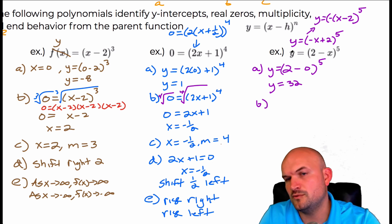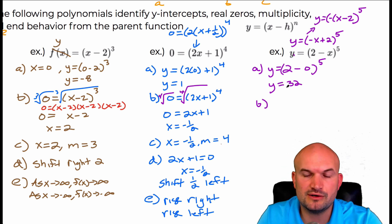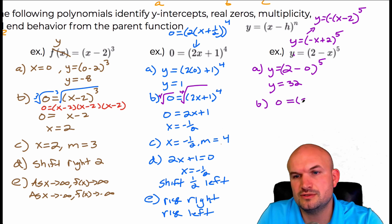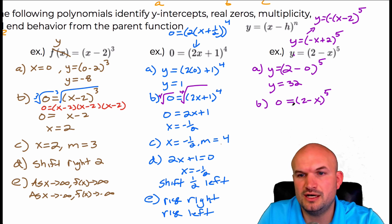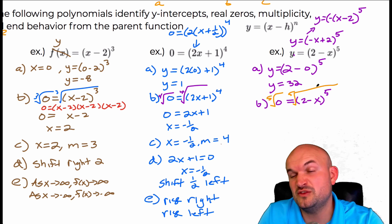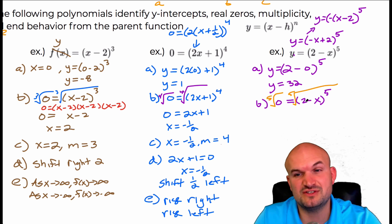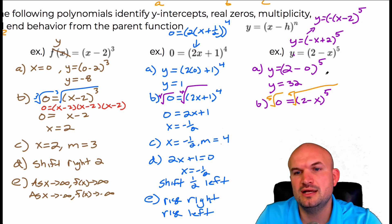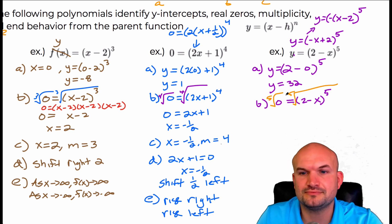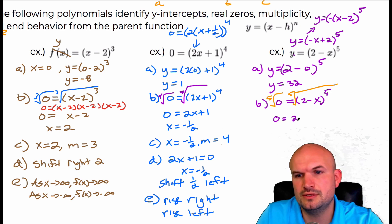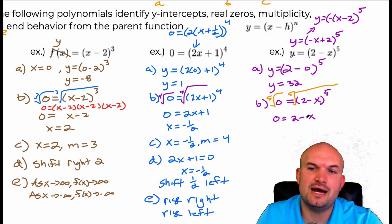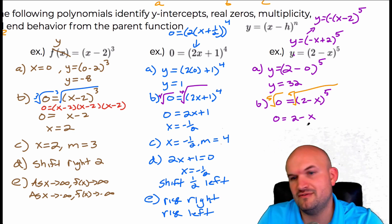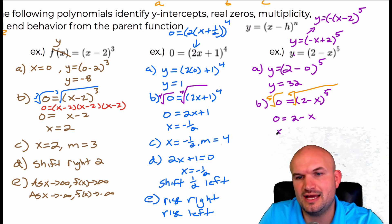To find the zero, we're going to set the y value equal to zero and solve for x. Zero equals two minus x to the fifth. Use the fifth root property on both sides — the fifth root and raising to the fifth power are inverse operations, so they undo each other. That leaves us with zero equals two minus x. Add x to the other side: x is equal to two.